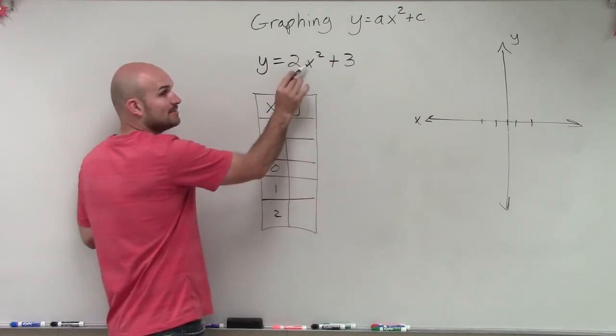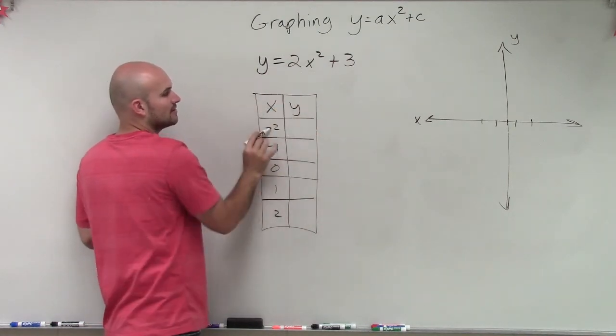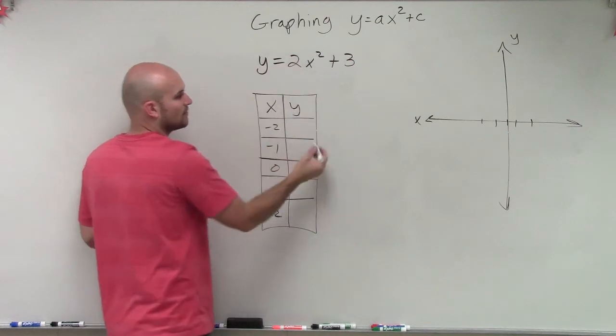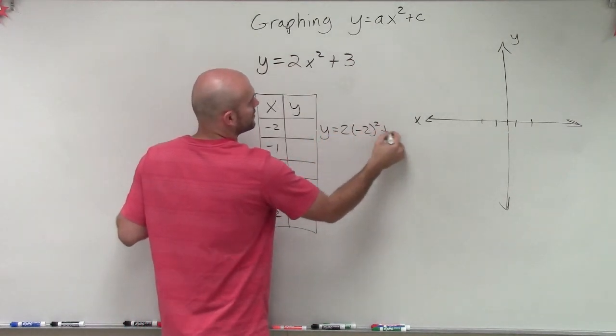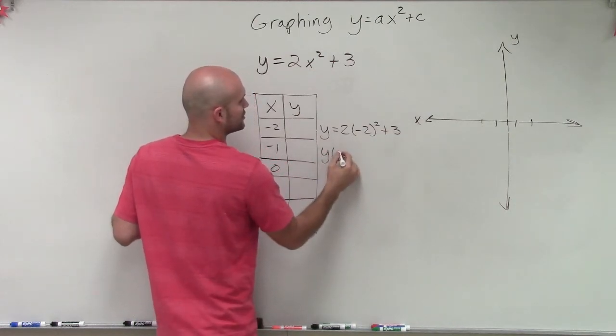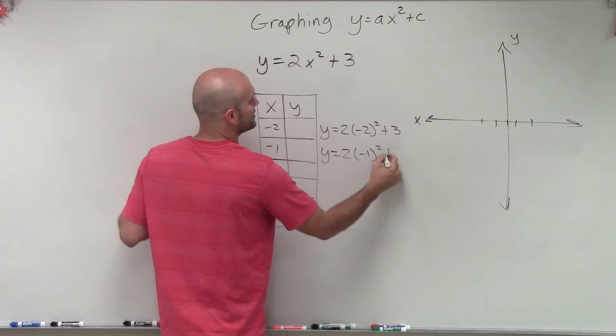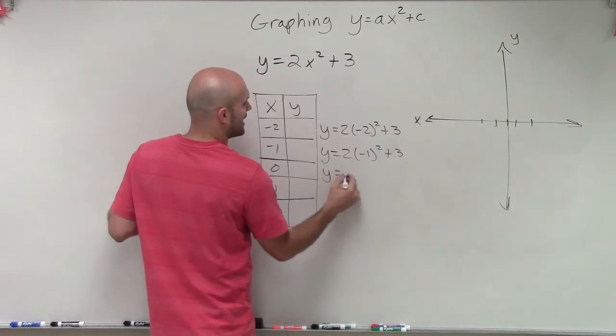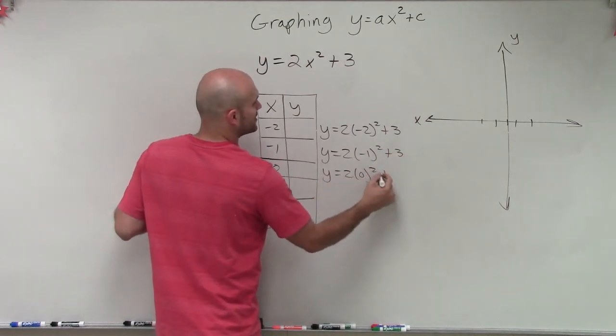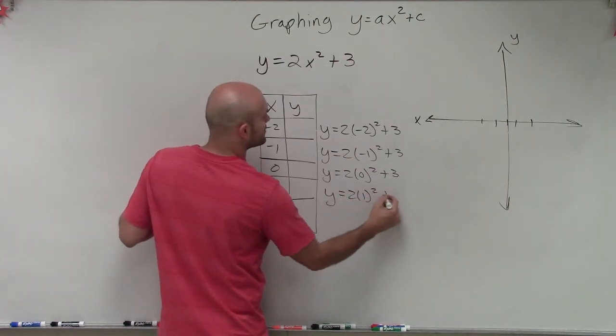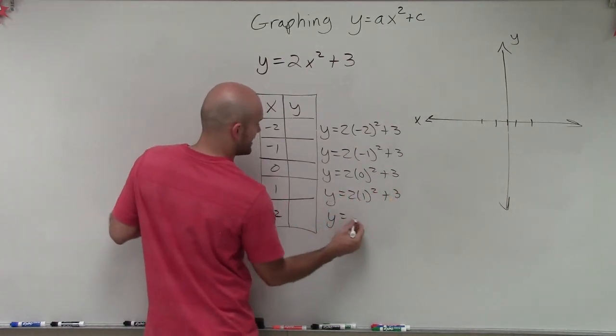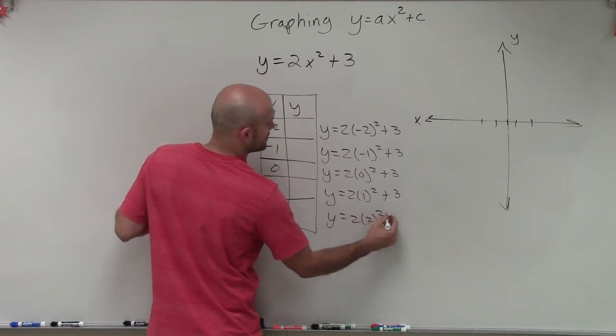So to do that, I'm going to plug in my value in for x, and then solve for y. So I have y equals 2 times negative 2 squared plus 3. y equals 2 times negative 1 squared plus 3. y equals 2 times 0 squared plus 3. y equals 2 times 1 squared plus 3. And then y equals 2 times 2 squared plus 3.